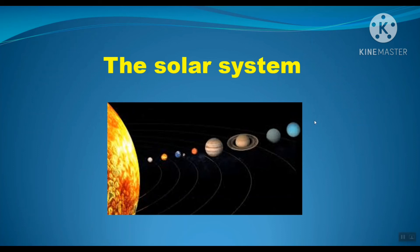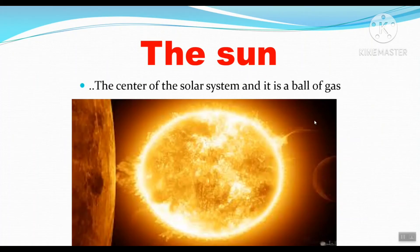And now we will talk about the solar system. The sun. The sun is a burning ball of gases, and life on Earth depends on the sun. It is the source of light and heat on Earth.